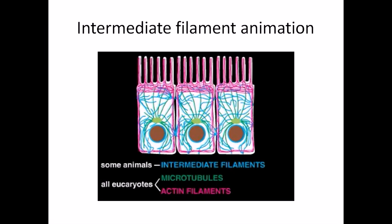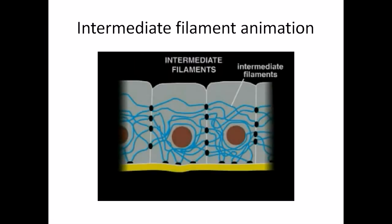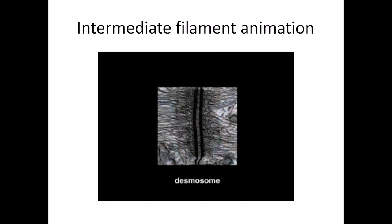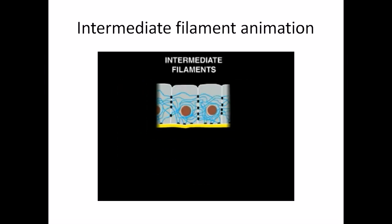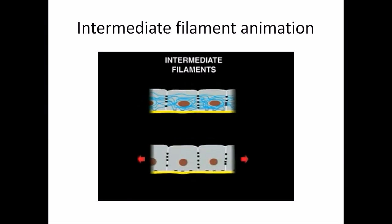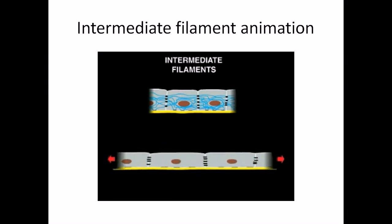Intermediate filaments are found in animal cells that require a lot of strength, such as the epithelial cells of the skin. Some of these filaments span the length of the cell connecting cell-cell junctions called desmosomes. These cables of intermediate filaments have high tensile strength. Without these filaments, stretching or pressure on the epithelial sheet would cause it to rupture.